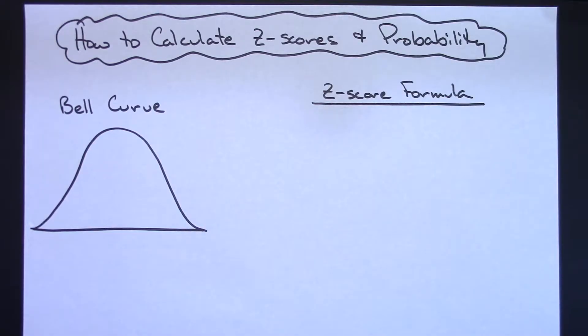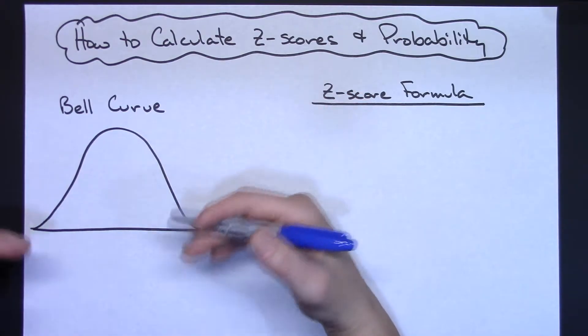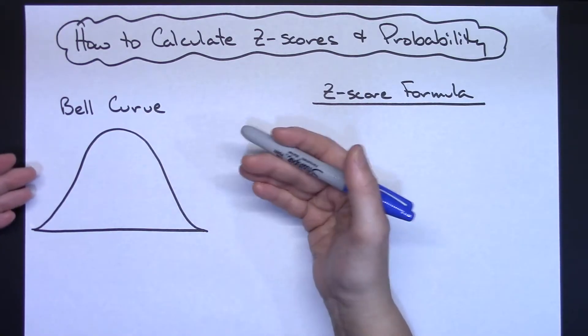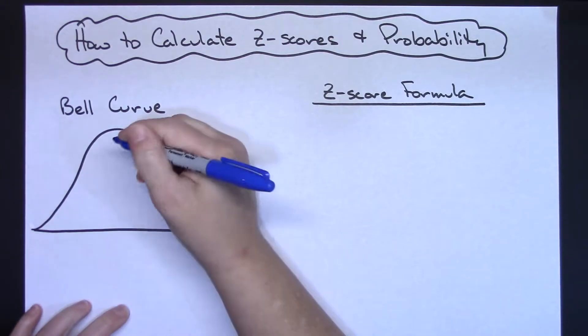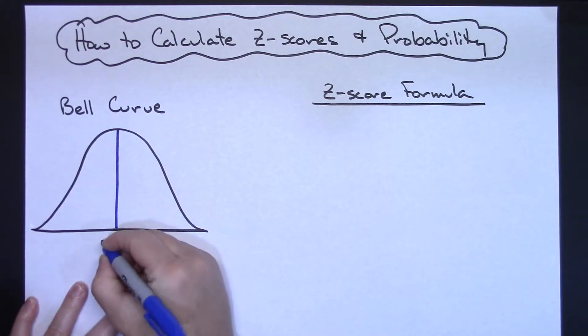First of all, we need to understand what a z-score is. We're going to do this from a picture, because I think a picture makes it more understandable here. We've got a bell-shaped curve. On a bell-shaped curve, you will have the mean that is smack dab in the center. So let's put our mean on here.